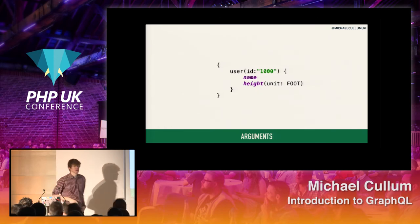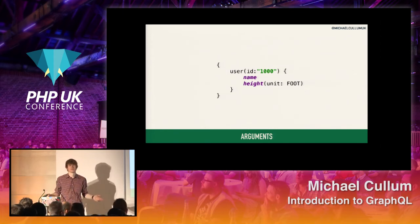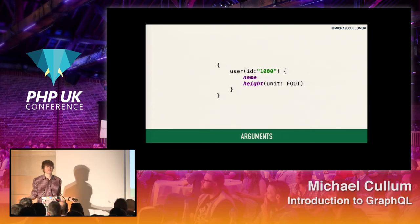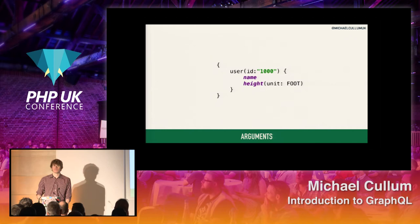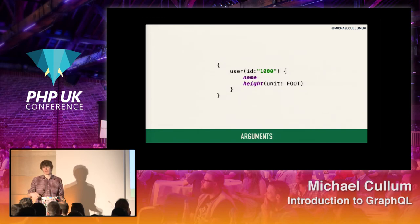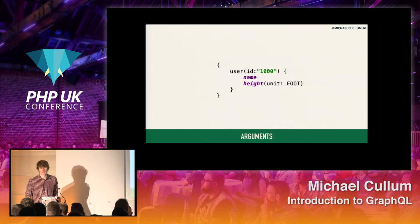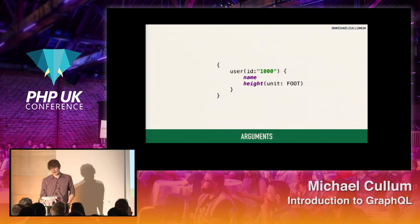I can also use arguments on scalar properties. GitHub doesn't have examples where they do this, but essentially what you could do is say I want 'name' and 'height'. So we can specify the specific unit that we want — we can say I want my height in feet because whilst I might normally prefer metric, I prefer my height in feet. It would then come up with Michael and 6'4. Essentially what I can do is I can just use that for manipulation of a scalar field. So arguments can kind of go wherever, which is an odd concept that we might not be used to.